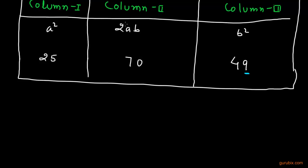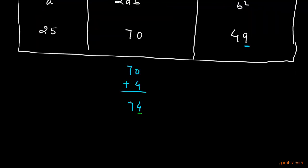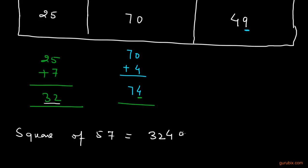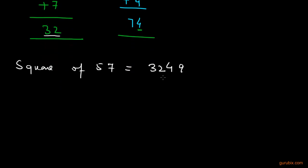We add the remaining tens digit of B² (which is 4) to 2AB: 70 plus 4 equals 74. We underline the unit digit of this sum, which is 4, and add the remaining tens digit (7) to A²: 25 plus 7 equals 32. We underline the whole number 32. So the square of 57 is found by writing the underlined digits in sequence: 32, 4, 9 — giving us 3249.